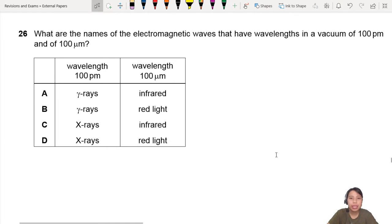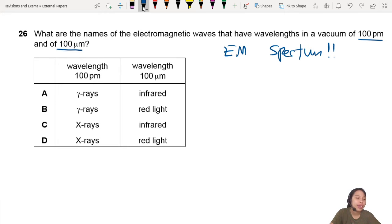What are the names of electromagnetic waves that have a wavelength in a vacuum of 100 picometers and 100 micrometers? Well, you have to memorize the EM spectrum. You can either memorize it in wavelength or in frequency. It's really up to you. But here you see it's all in wavelength, so if you memorize wavelength, that will save you some time.